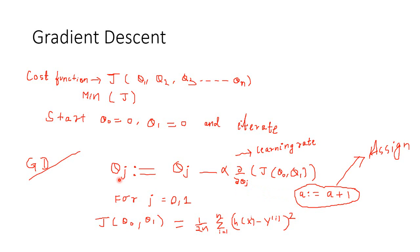So that is about the gradient descent algorithm. This algorithm can be used to find out the values of theta 1 and theta 0, and is used for minimizing the cost function. We will do a hands-on exercise in another video, wherein we will use this algorithm to find out theta 0 and theta 1 — or beta 0 and beta 1, it's the same; we can use any names for the parameters.